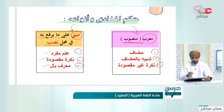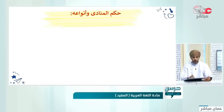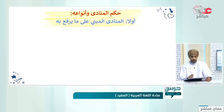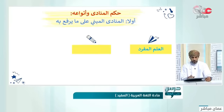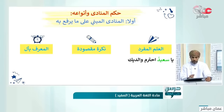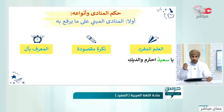إذن المعرب: المضاف والشبيه بالمضاف والنكرة غير المقصودة. المبني: العلم المفرد والنكرة المقصودة والمعرف بأل. ثالثاً حكم المنادى وأنواعه: المنادى المبني على ما يرفع به في محل نصب، نوعه الأول: العلم المفرد، الثاني: النكرة المقصودة، الثالث: المعرف بأل.